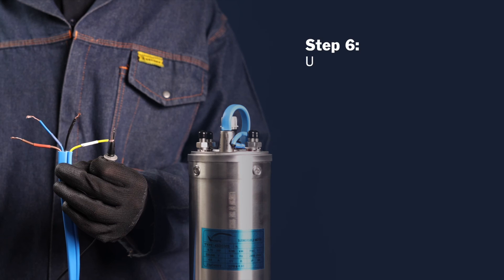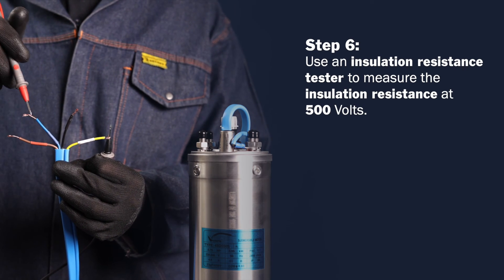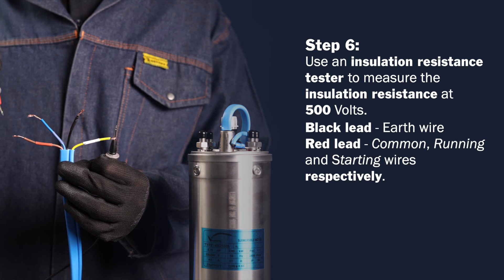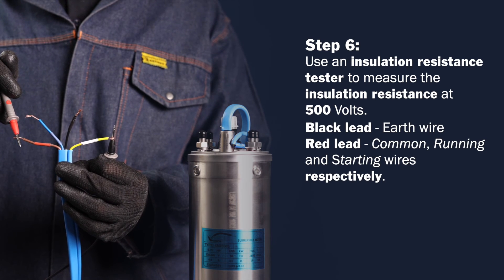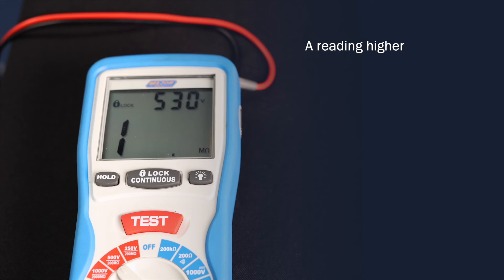Step 6. Using an insulation resistance tester, measure the insulation resistance at 500 volts with the black lead connected to the earth wire and the red lead connected to the common, running and starting wires respectively. The reading should be higher than 1 mega ohm to be acceptable, but in practice, an open line reading should be obtained.